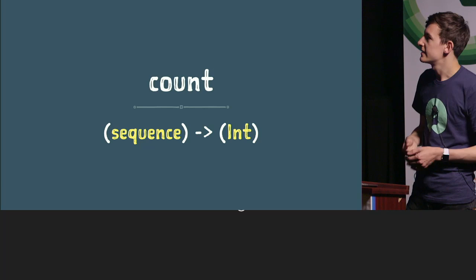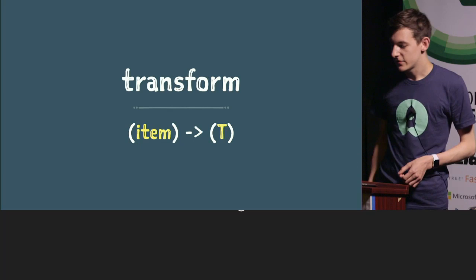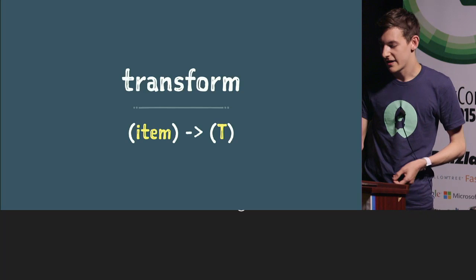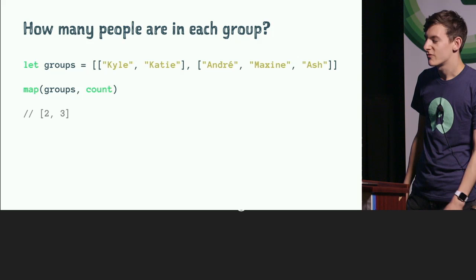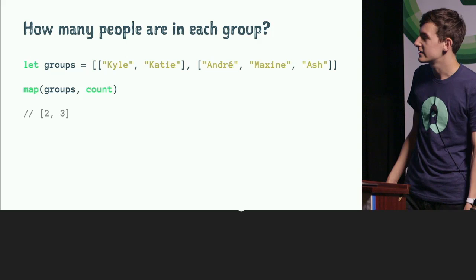You might notice that count takes a sequence and returns an integer — this looks similar to our transform function: it takes an item and returns a type. So they're equivalent, which means we can just pass map the function directly: map(groups, count). We've gone from six or seven lines with the imperative approach to a single line with the more declarative approach.